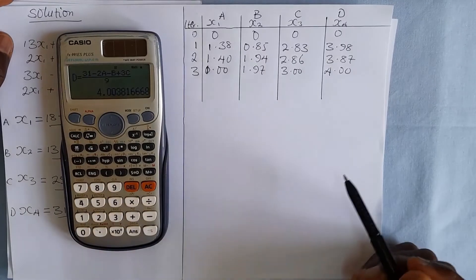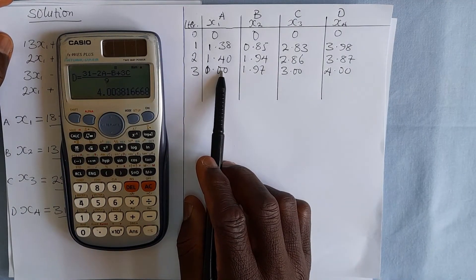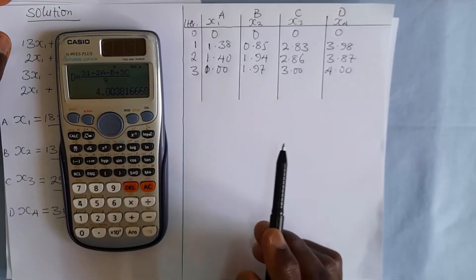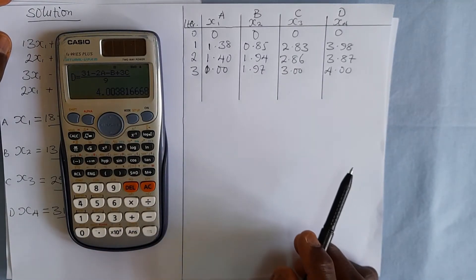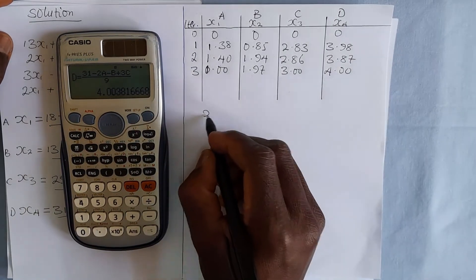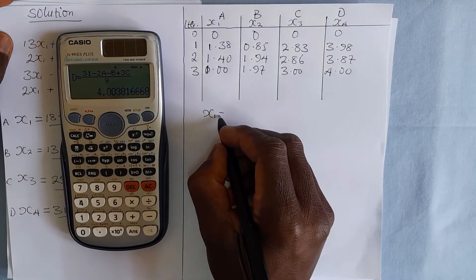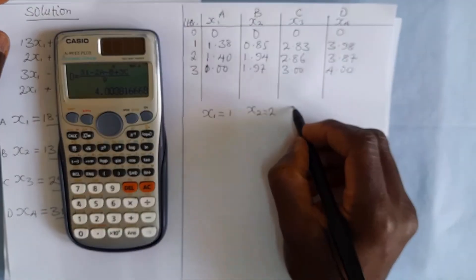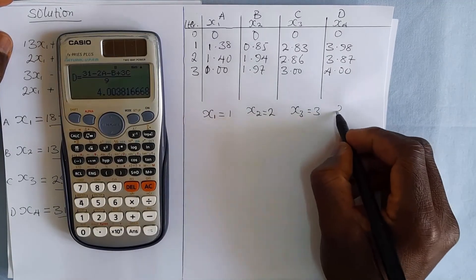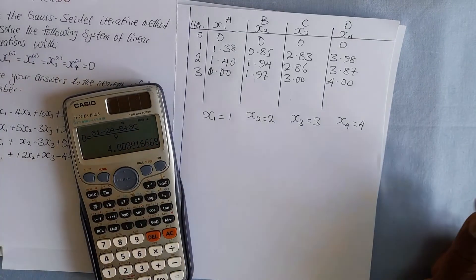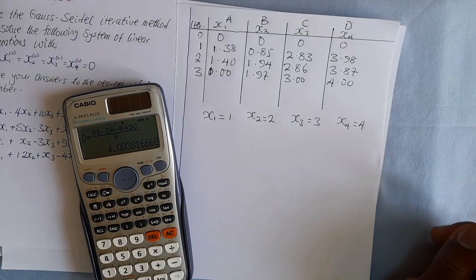Checking the whole number values: x1 = 1, x2 = 2, x3 = 3, and x4 = 4. The answers have converged, so there is no need to proceed further. These are our final answers. Thank you so much for watching, and may God bless you as you consider subscribing to our channel.